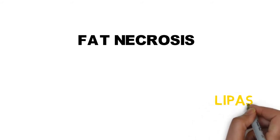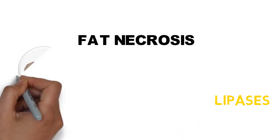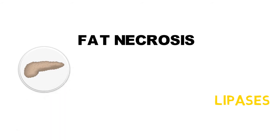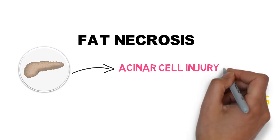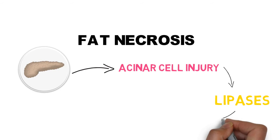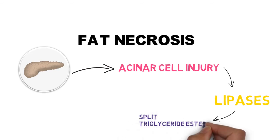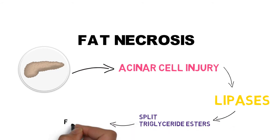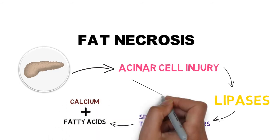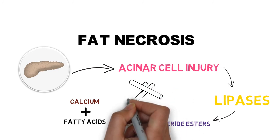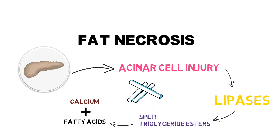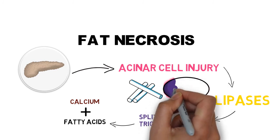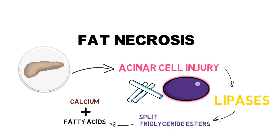The fifth pattern is fat necrosis. It refers to a focal area of fat destruction by enzymes like lipases, occurring in the pancreas and peritoneum. In acute pancreatitis, injury to the acinar cells leads to release of lipases, which split the triglyceride esters in fat cells. The released fatty acids combine with calcium to produce calcium soaps. Grossly it looks like chalky white deposits. Microscopically there are adipocyte outlines without nuclei, with basophilic calcium deposits, surrounded by an inflammatory reaction.